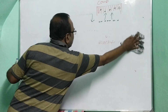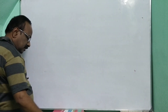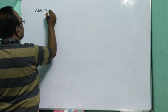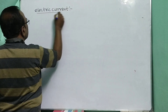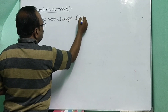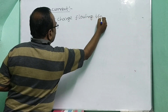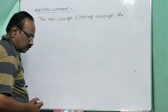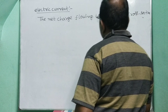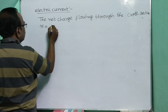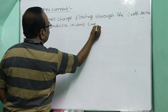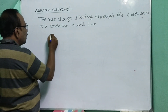What is current electricity or electric current? The net charge flowing through the cross-section of a conductor in unit time is called electric current. The formula is: I = Q / T, where I means electric current or current, Q means charge, and T means time.